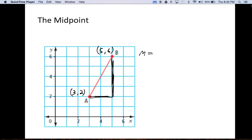Essentially, the midpoint formula is this. You take the x's and add them together and divide by 2. Then take the y's, add them together and divide by 2.